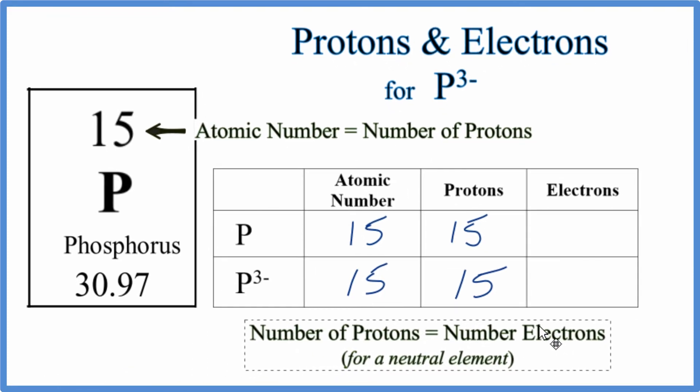For a neutral element like P on the periodic table, phosphorus here, we're going to have the number of electrons and protons are the same. So protons equals electrons. We have 15 electrons. That makes sense, positive protons, negative electrons, if they're the same we'll have a neutral element.